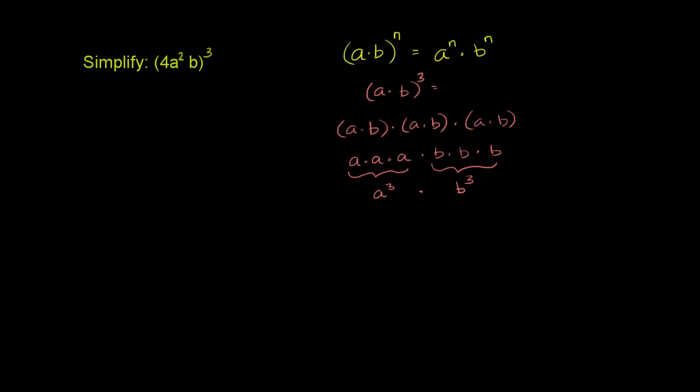Now let's apply it to the actual problem. So we have 4a squared b to the third power. That means that each of these components in the product are going to be raised to the third power.